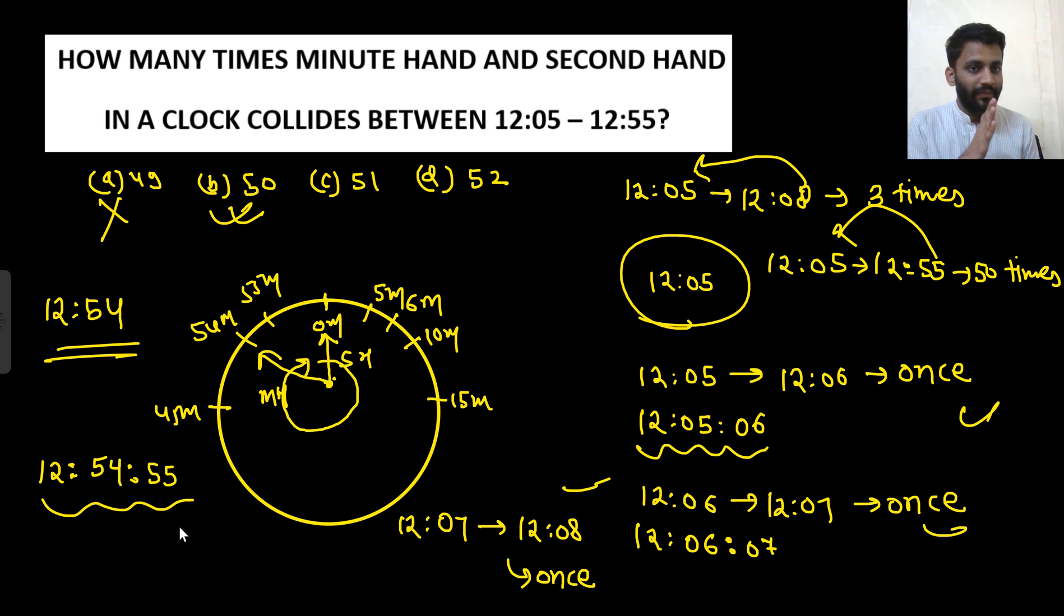This time comes before 12:55 only, not after 12:55. After 12, when it is 12:55, the second hand is at zero minutes. Now it will again strike at 12:55 and some 55 or 56 seconds.